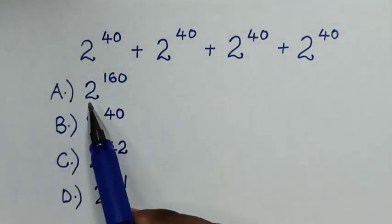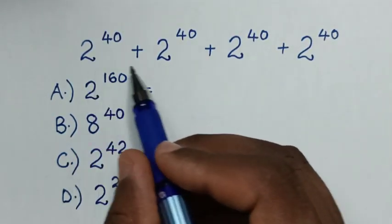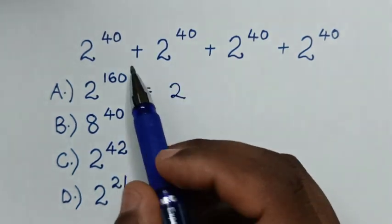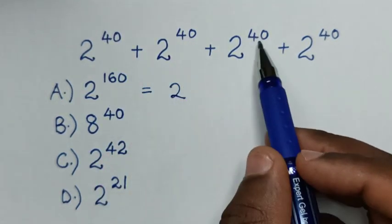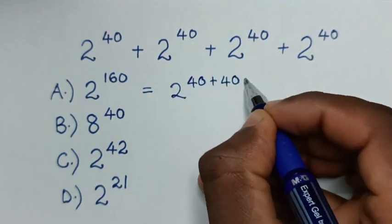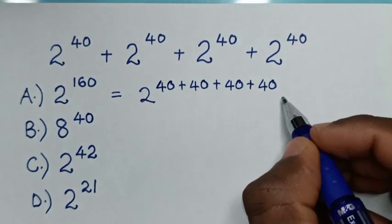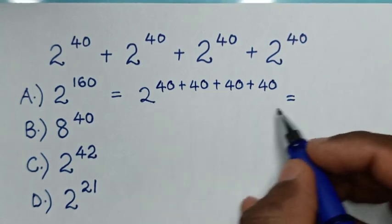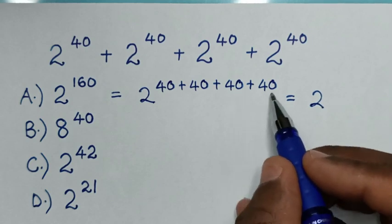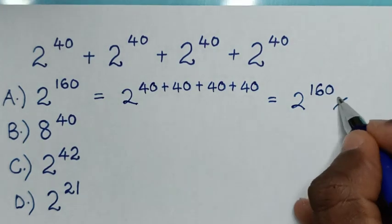So from the answer in A, 2 power of 160. It is equal to — in here we have same base of 2, so it will be 2 power of the sum of these powers of 40. So it will be power of 40 plus 40 plus 40 plus 40, which equals 2 power of 160. This is the wrong solution.